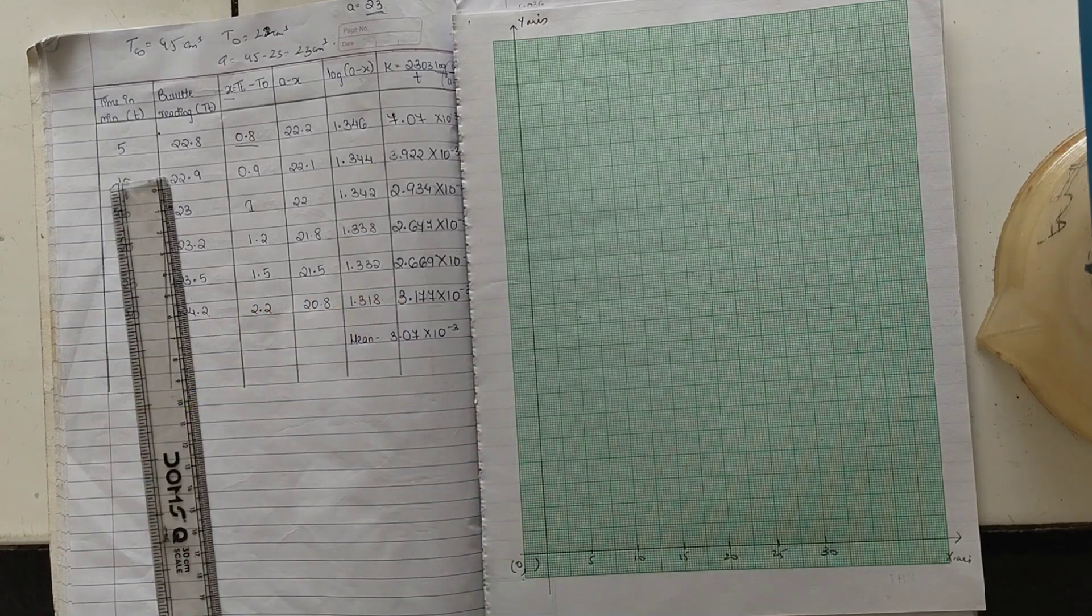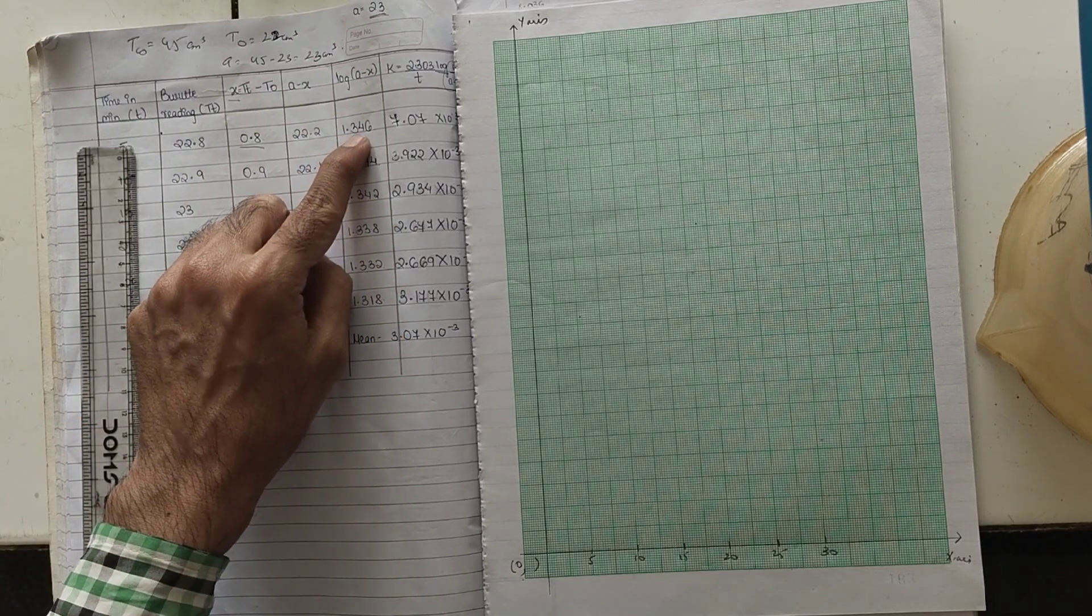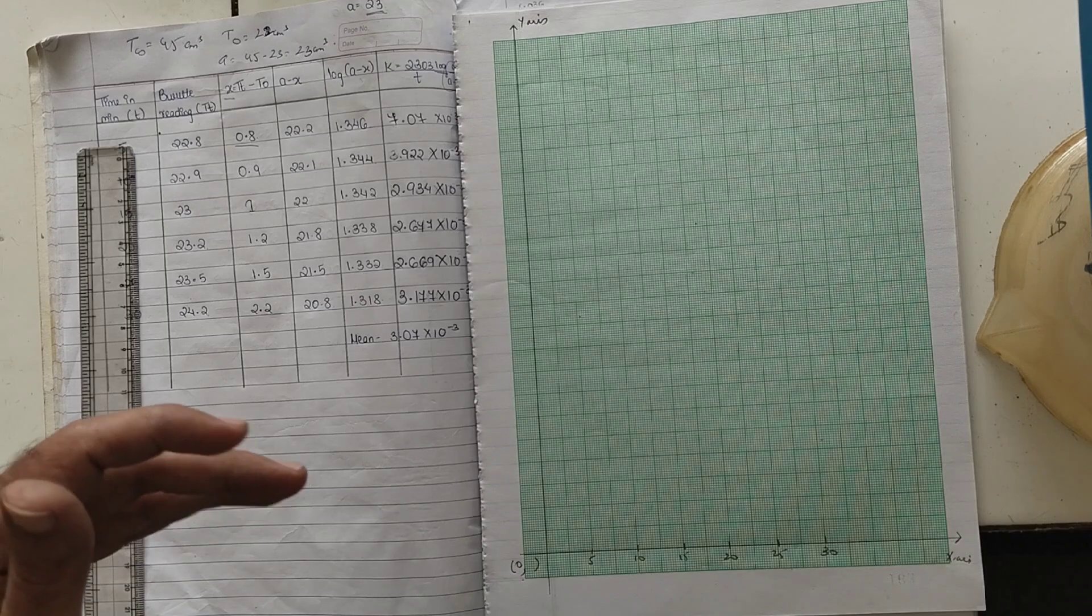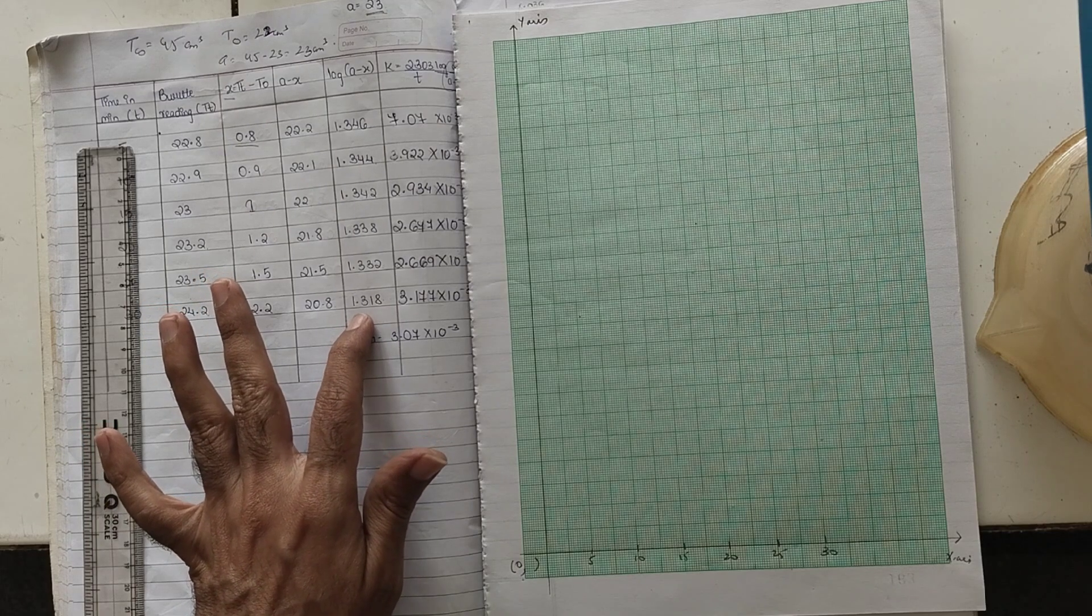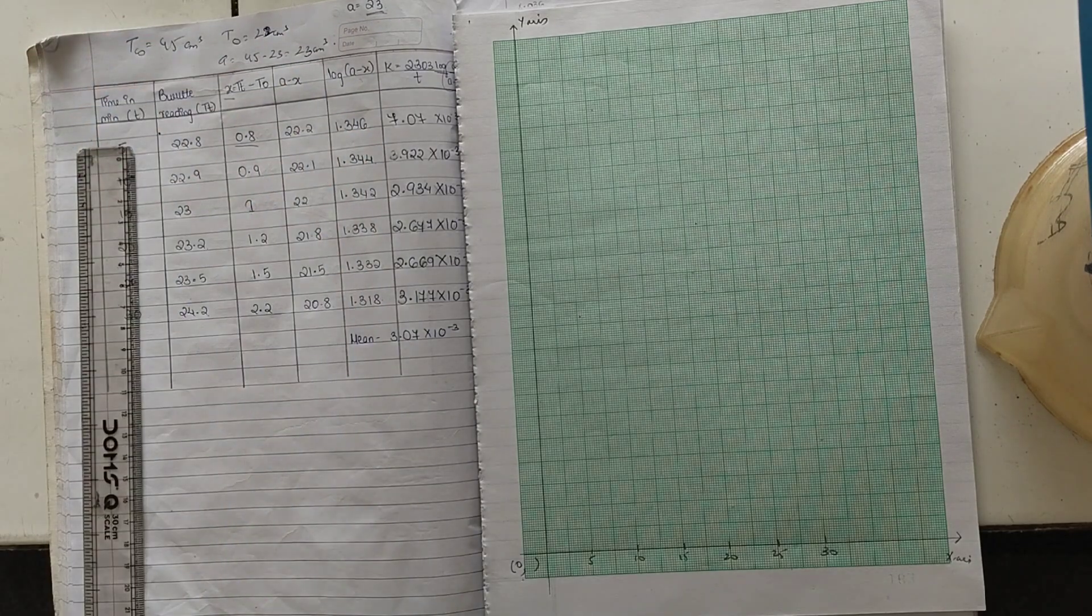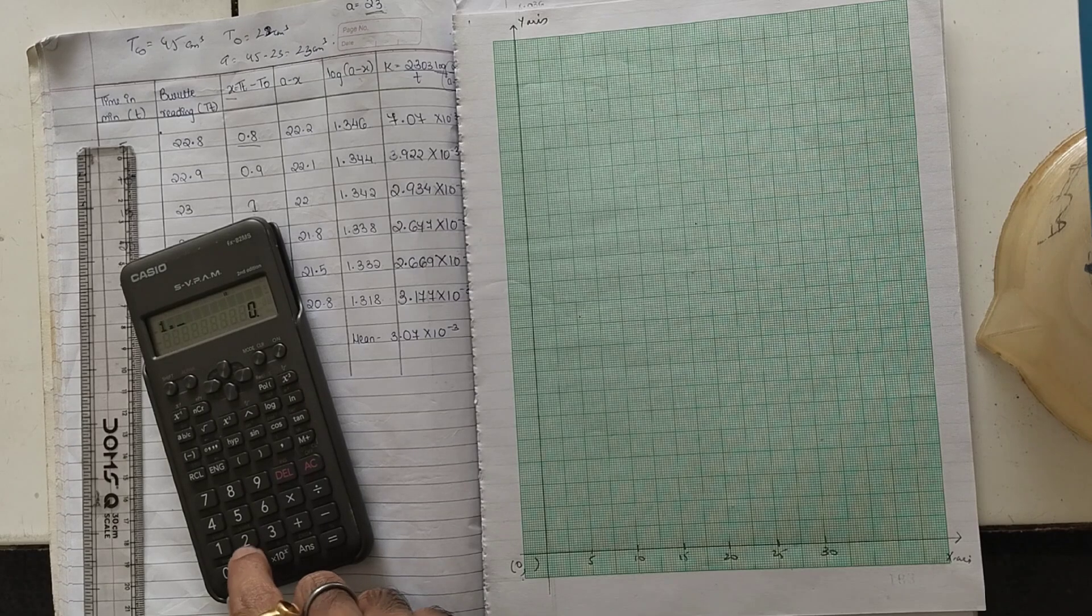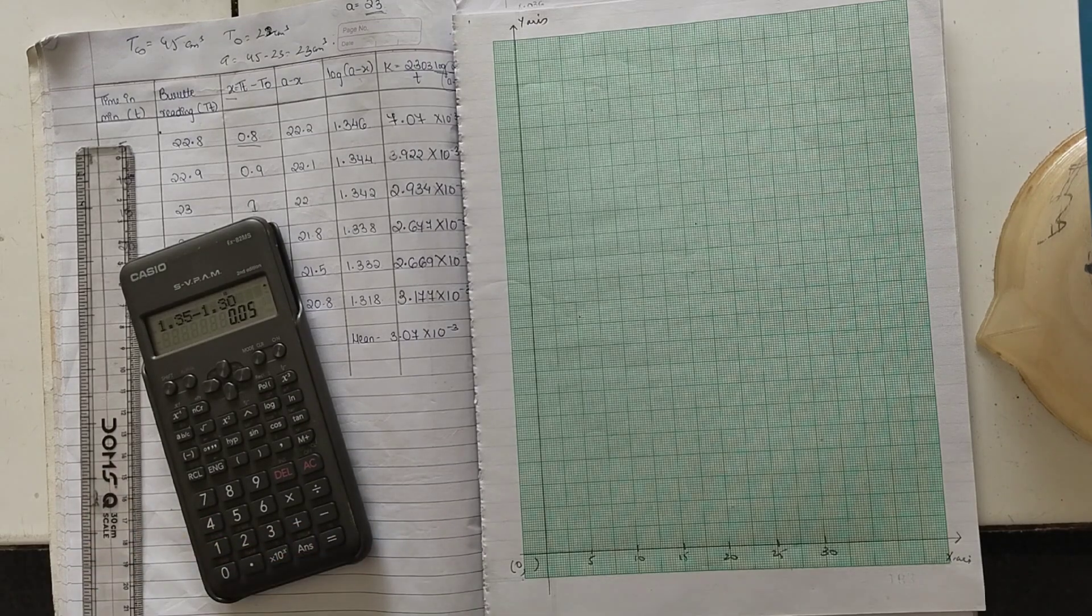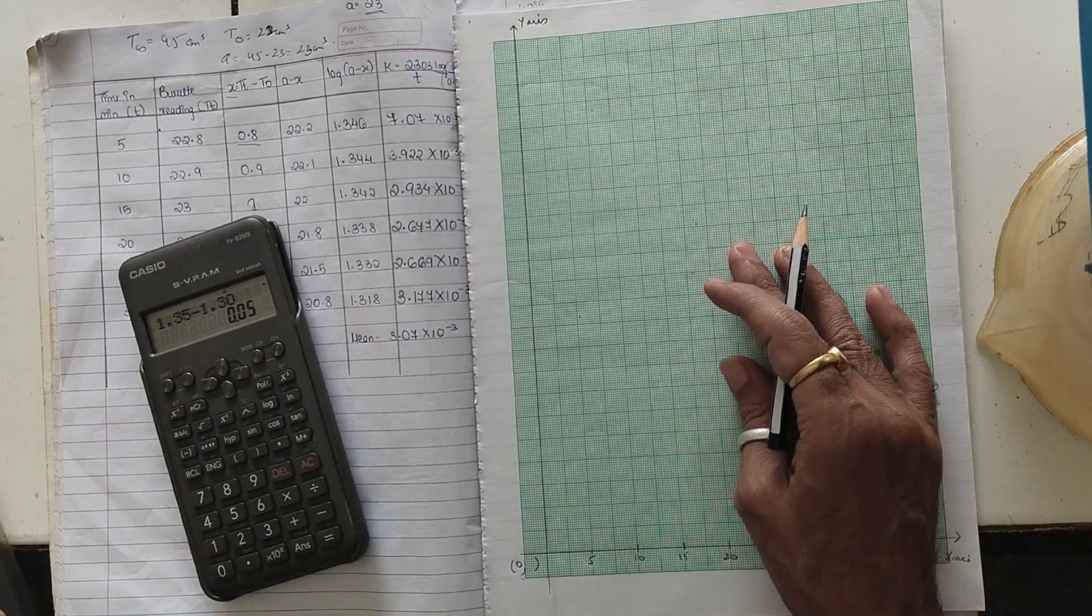We have zero over here as X-axis. Now we go for Y-axis. For Y-axis, the highest value is 1.346, the lowest value is 1.318. So the range that has to be selected must be such that it should be higher than the highest and lower than the lowest. So let's say we start with 1.3. The highest value is 1.346, so higher than the highest means we say 1.35.